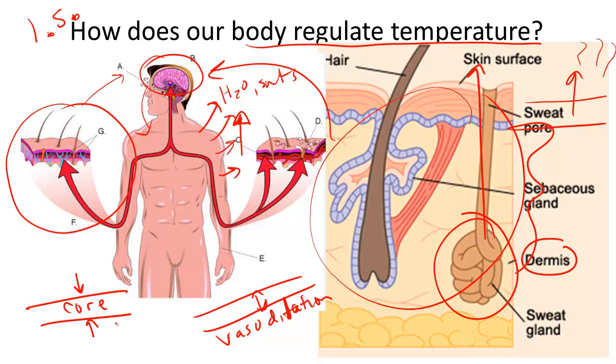The second thing that happens is we are going to halt the production of sweat. The third thing that is going to happen is we are going to tell our muscles to shiver or to involuntarily contract. These involuntary muscle contractions known as shivering help us increase the heat generation in our body.